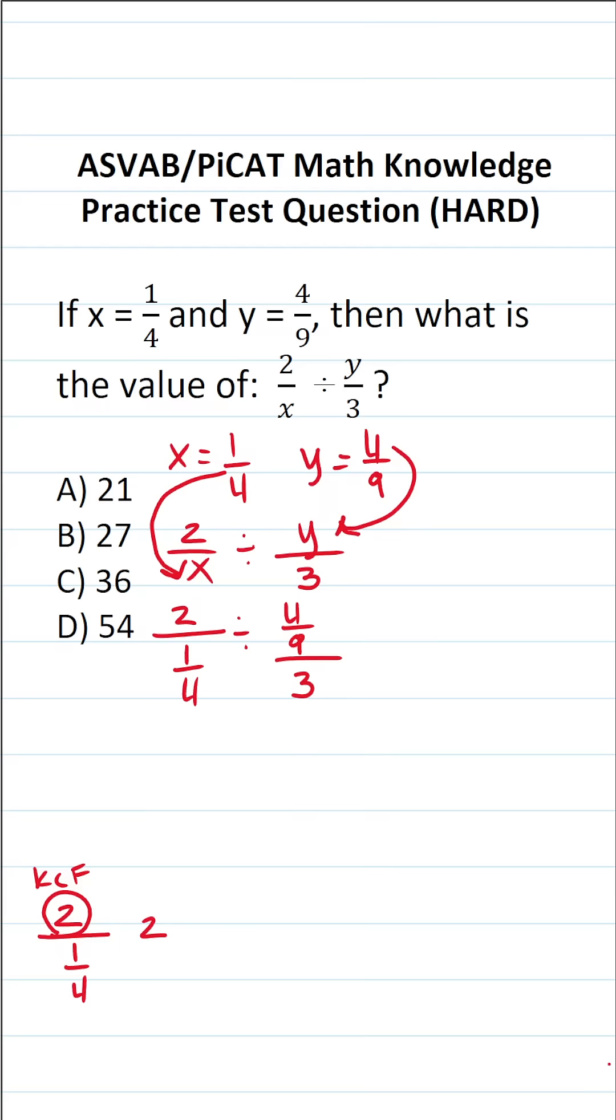We're going to change from division to multiplication and flip the fraction in the denominator. So instead of being 1/4, it's going to be 4/1. What is 4/1? 4 divided by 1 is just 4. So this becomes 2 times 4, which is 8. In other words, 2 divided by 1/4 is just 8.